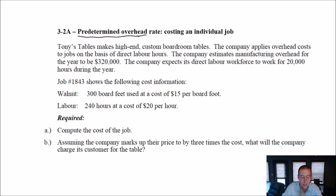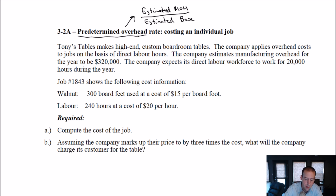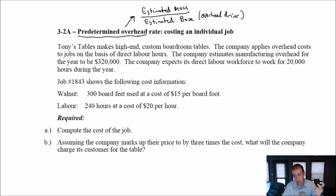So what does predetermined overhead rate mean? It's a little formula. We take estimated overhead divided by estimated base. What I mean by base is something that we believe drives overhead — an overhead driver. So we take our estimated total overhead for the upcoming period — we make an educated guess — and we divide that amount by what we think is going to drive our overhead, often direct labor hours or machine hours. And we say, okay, how many dollars per hour per unit of this cost driver?